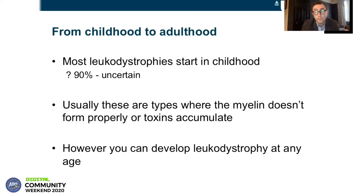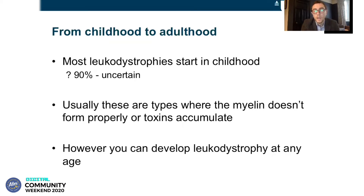Leukodystrophies can develop in childhood right the way up to adulthood, but most do start in childhood. The percentage of leukodystrophies that develop in childhood is a little bit uncertain, but I would say it's somewhere around 90%. So it's only a minority of patients who first develop symptoms as an adult. Usually the forms that develop in children are ones where the myelin doesn't form properly or toxins accumulate. But you can develop leukodystrophy at any age — we have patients in their 60s or 70s who first develop symptoms.